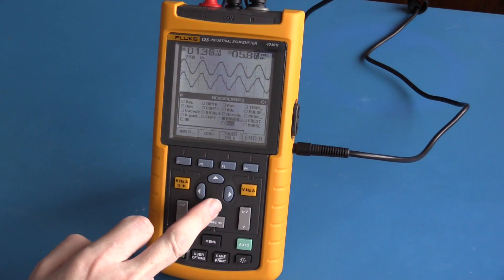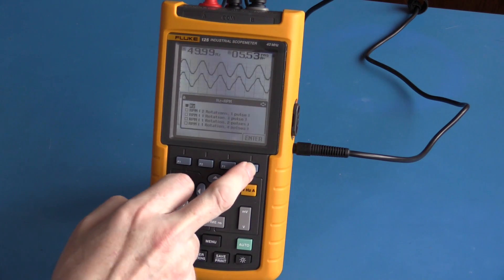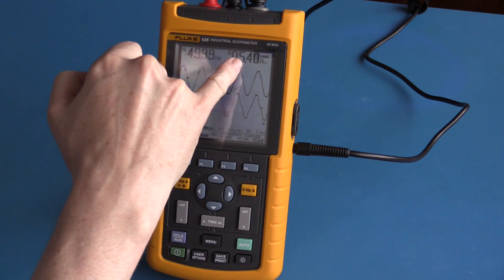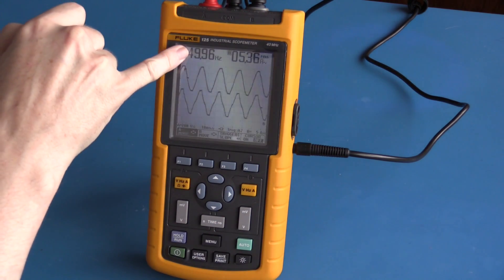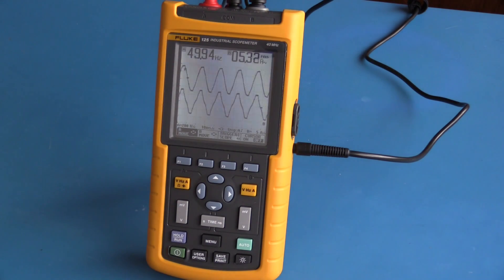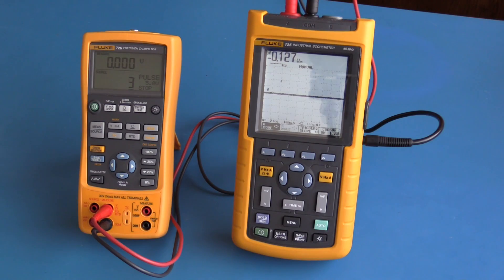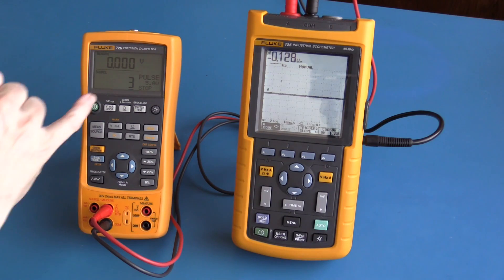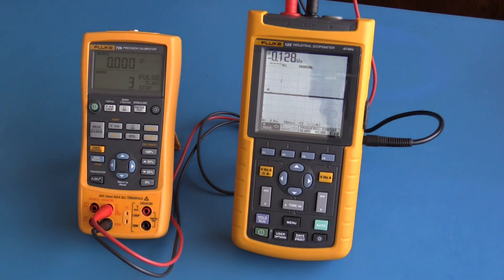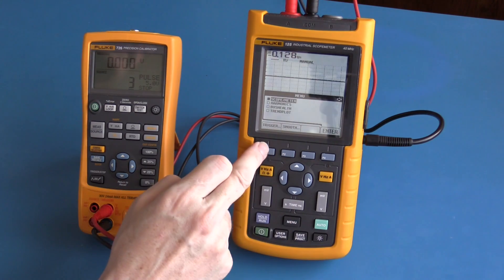I could also look at frequency, 5.4 amps, 49.96 Hertz. I have my Fluke 726 set up to generate three pulses. These are square waves, 5 volt peak to peak. These pulses appear briefly on the display but I want to be able to hold and capture those so I can analyze them. The easiest way to do this is to set up a single shot trigger.